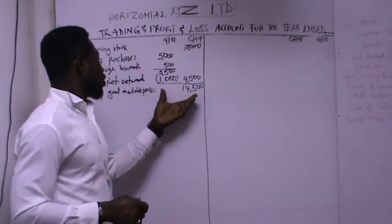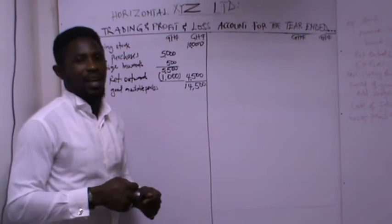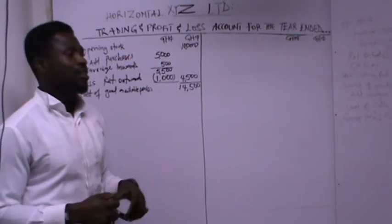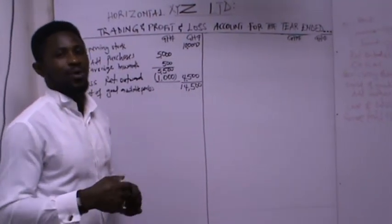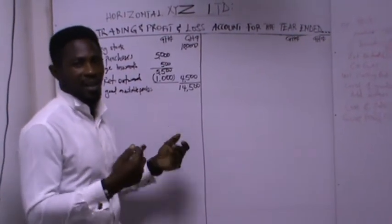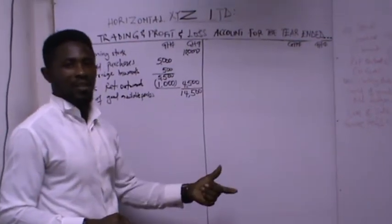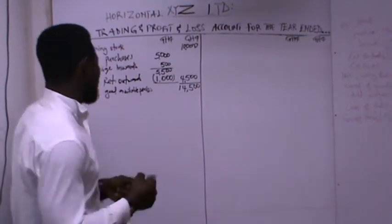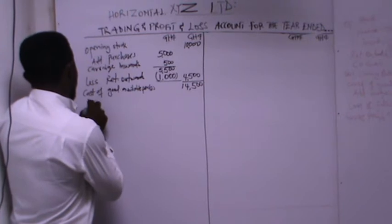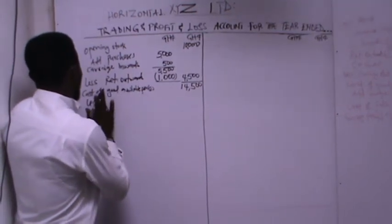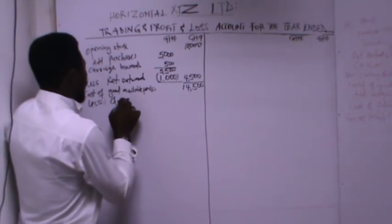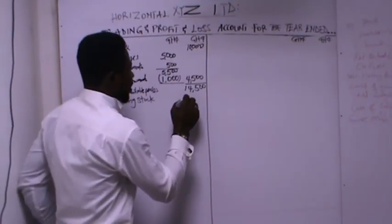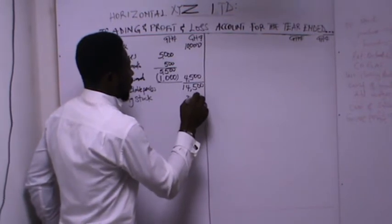When you get your cost of goods available for sales, the next thing to consider is your closing stock. You check the closing stock from the additional information — you will not find it in the trial balance. That is why you need to consider both the trial balance information and the additional information. The closing stock for the period is 3,000 Ghana cedis.